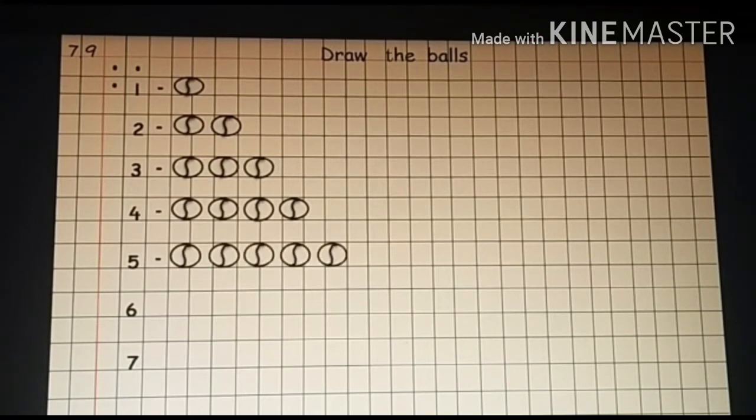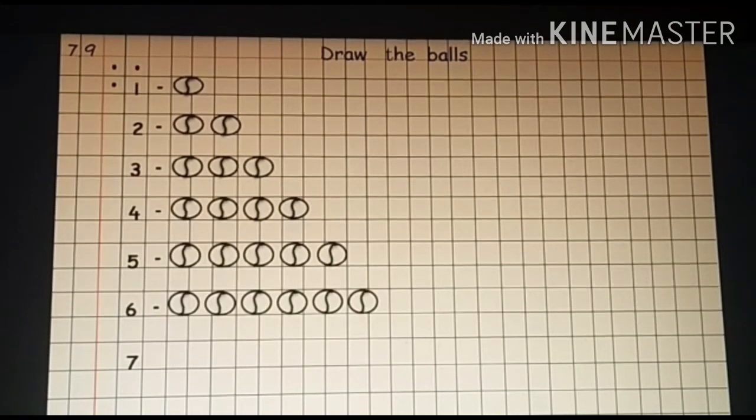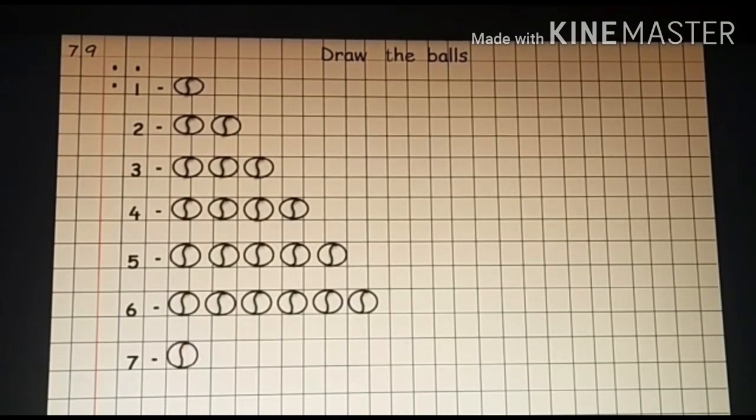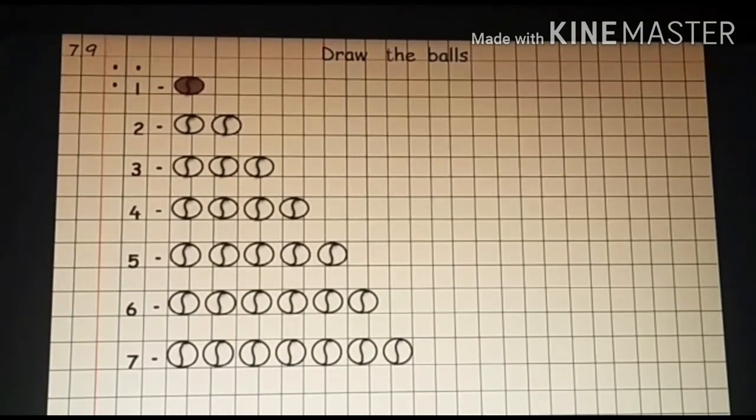For four: one, two, three, four. Five: one, two, three, four, five. For six: one, two, three, four, five, six. For seven: one, two, three, four, five, six, seven. You can color the balls.